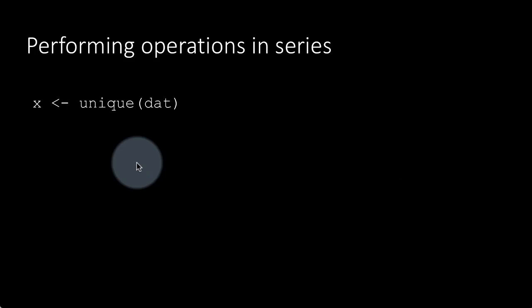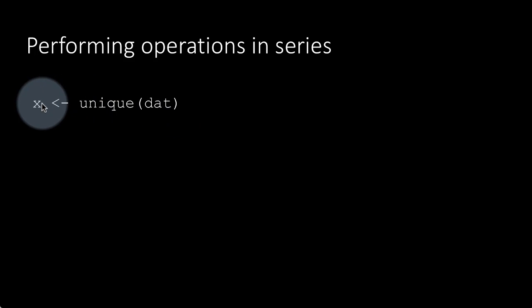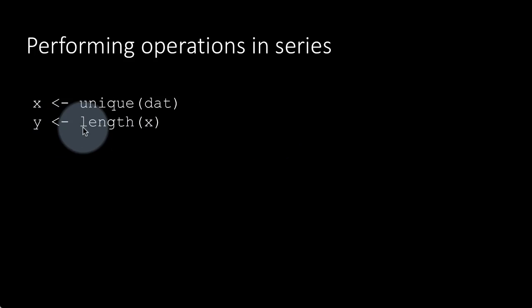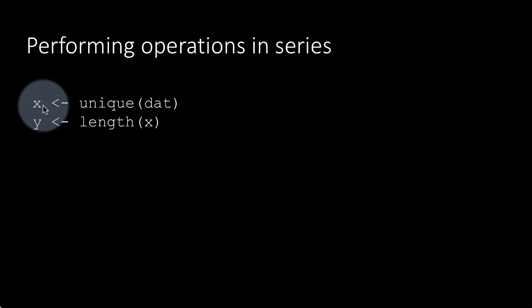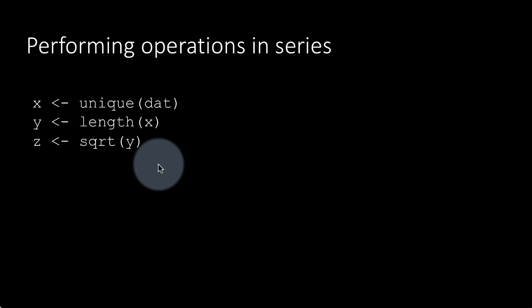Going back to the scenario of performing operations in series — here's a simple example. Suppose I have a vector called 'dat'. I say x is unique(dat), so x is a vector of all the unique elements of dat. Then y is length(x). Then I take that result and perform the square root operation on it. So operations are happening in what might be called a pipeline.